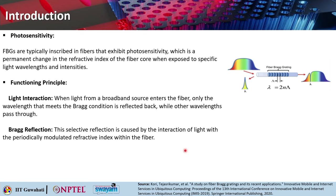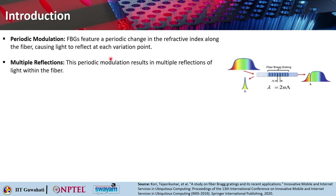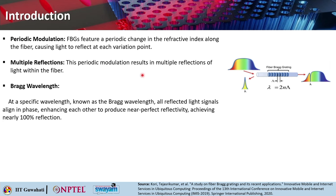Bragg reflection is a selective reflection caused by the interaction of light with the periodically modulated refractive index within the fiber. At each interface there is some reflection, and this periodic modulation results in multiple reflections of light within the fiber. At a specific wavelength, all reflected light signals align in phase and constructively interfere, giving nearly 100% reflection. That wavelength is called the Bragg wavelength.